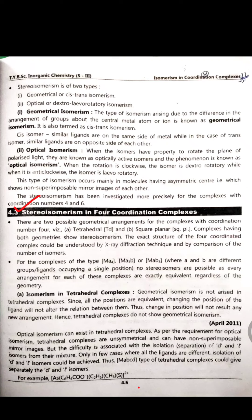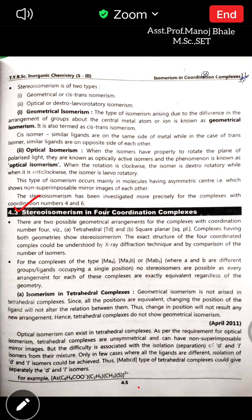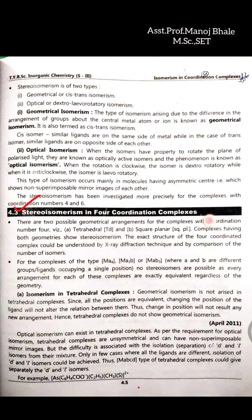Today we are starting a new point of this chapter: stereoisomerism in four-coordinate complexes. There are two possible arrangements in four-coordination compounds: tetrahedral, indicated as [Td], and square planar, indicated as [sq.pl.]. Both geometries are present in four-coordinate compounds, and the exact structure can be observed using X-ray diffraction technology.